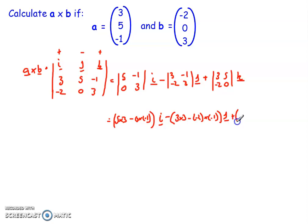And then in the k, I've got plus 3 times 0, take away, negative 2, times 5, in the k direction. Now each of these calculations are fairly straightforward and simple. I'd hope by now you could manage them all. 5 times 3 is 15, take away 0, just be 15, so I've got 15i.